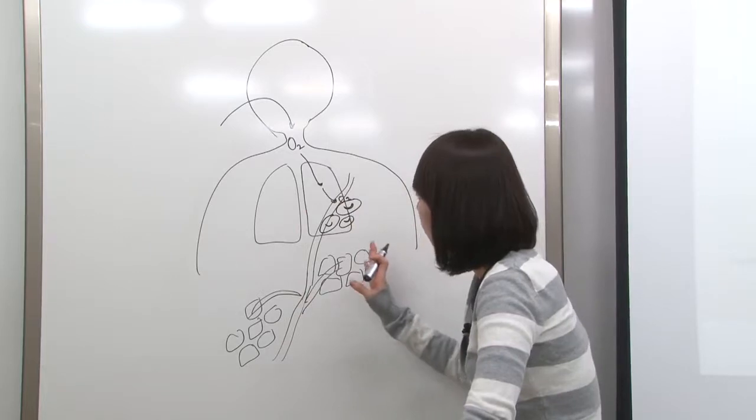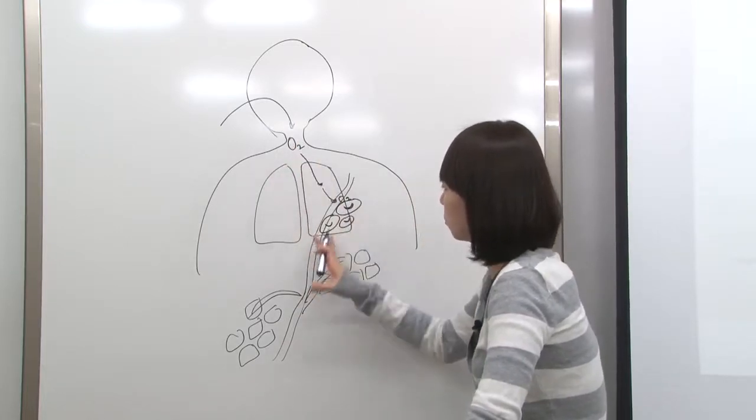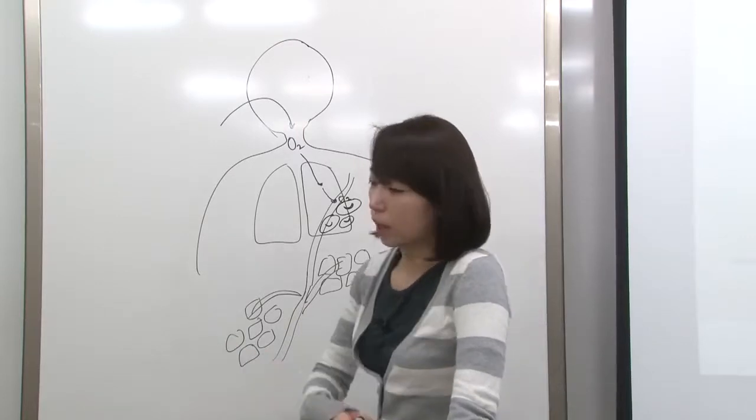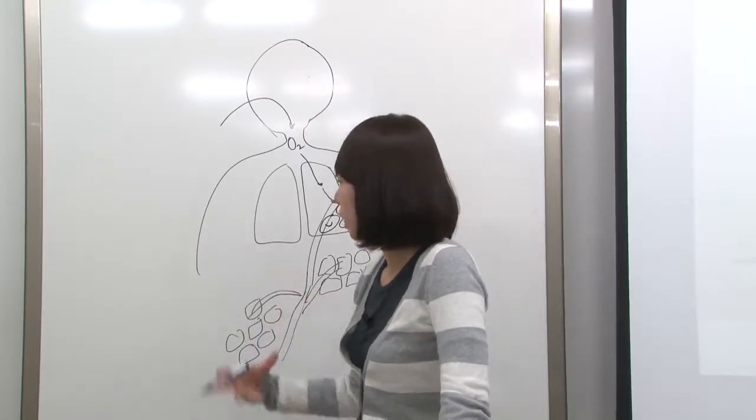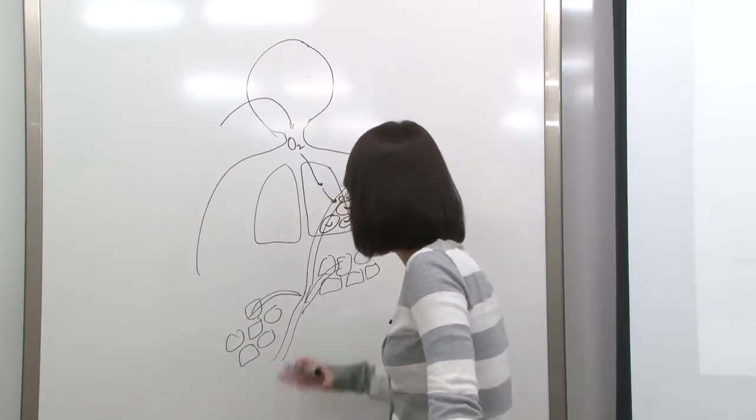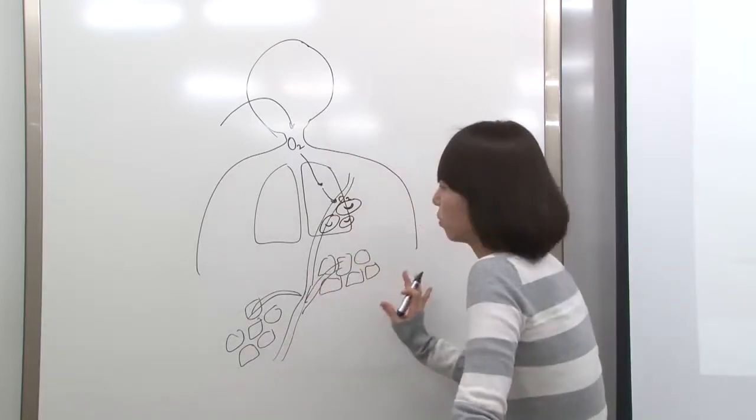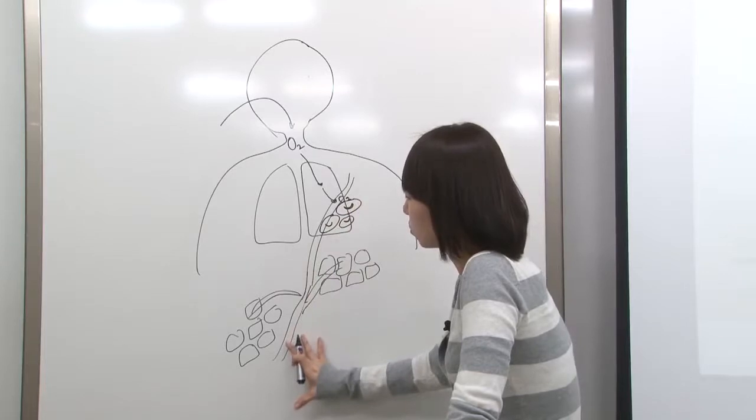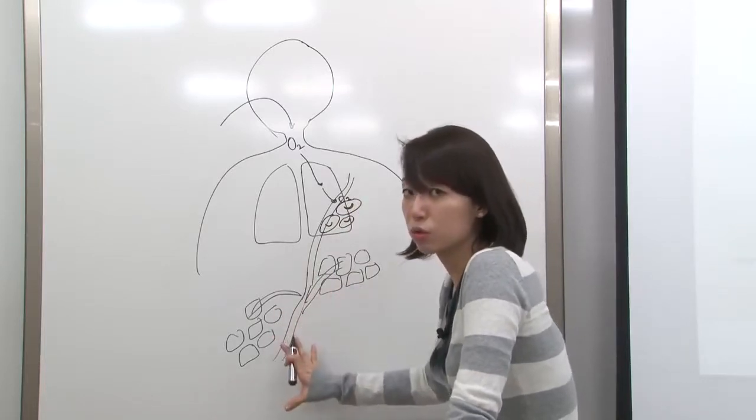After the lung takes in O2, these cells in our body, the intestine or any other organs in our body need O2. So then these red blood cells are going to carry O2 to these different tissues.